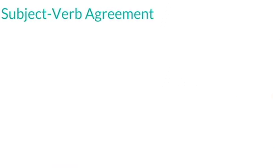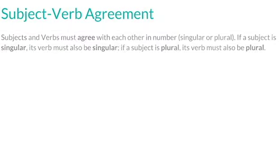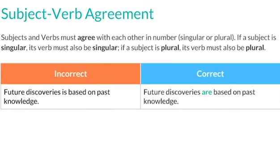Now let's talk about subject and verb agreement. When you're writing your sentence, you have to make sure that your subjects and verbs agree with each other in number. If your subject is singular, then the verb must also be singular. If the subject is plural, then the verb must also be plural. On the left-hand side we have the incorrect sentences, and on the right-hand side we have the correct sentences.